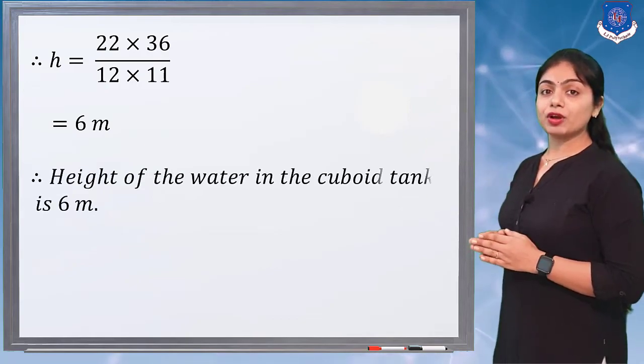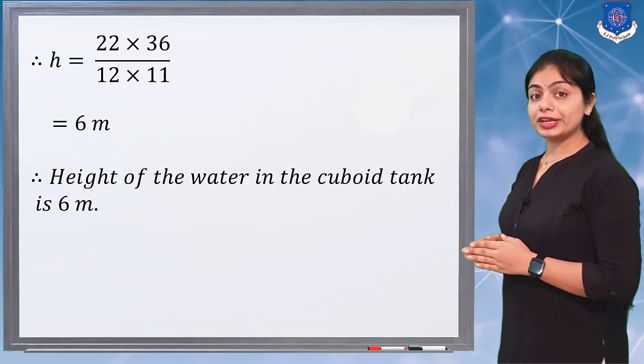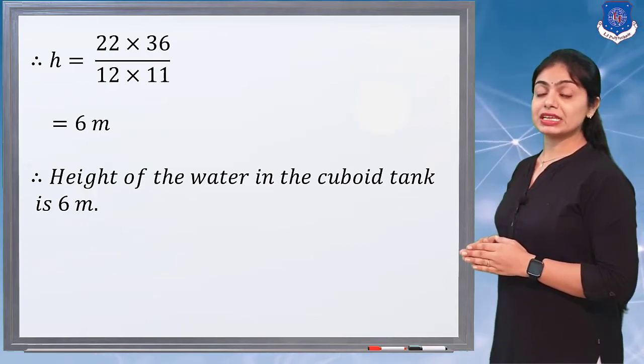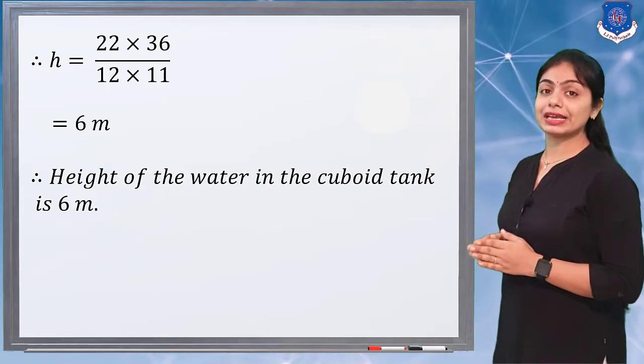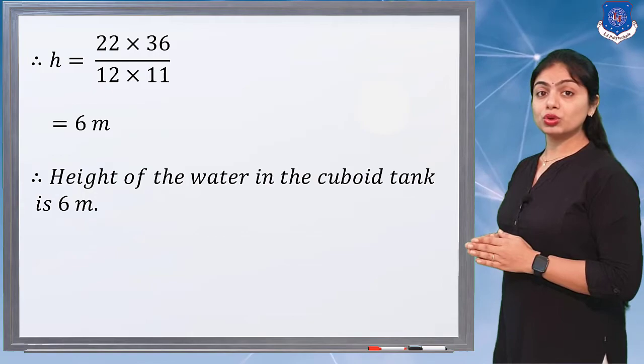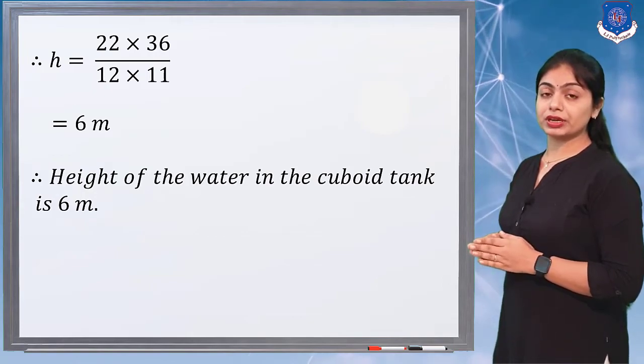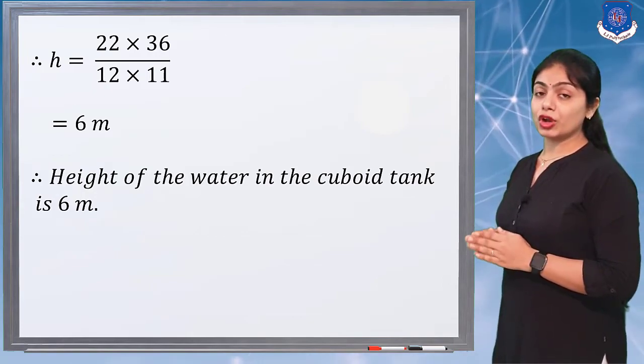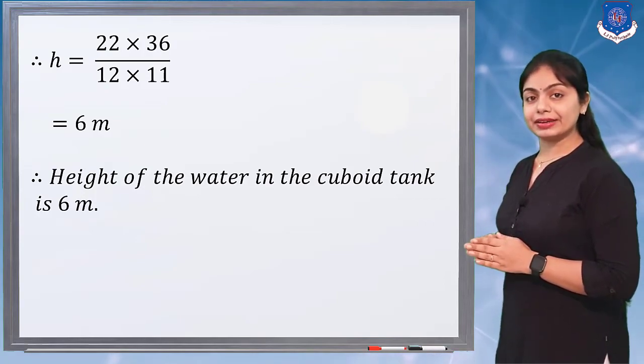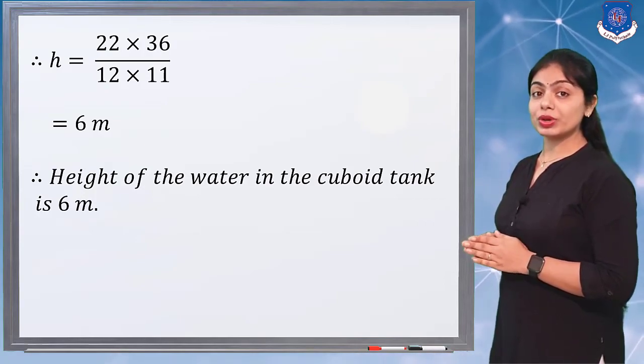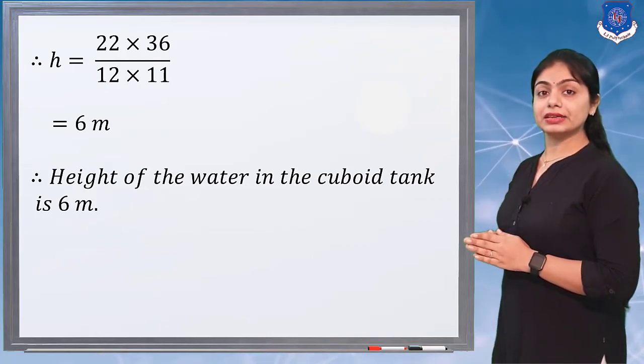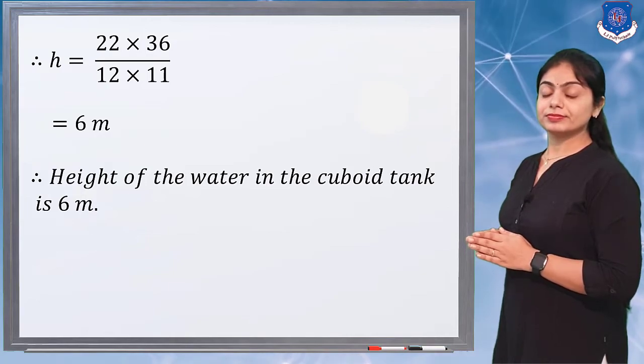Therefore, the height of water in the cuboid tank is 6 meters. This is another type of mensuration example. The two most important formulas here are the volume of a cuboid and the volume of a cylinder. This type of question is commonly asked in exam papers. Thank you.